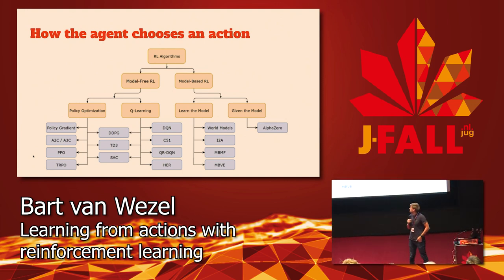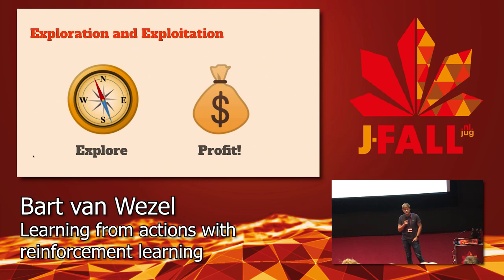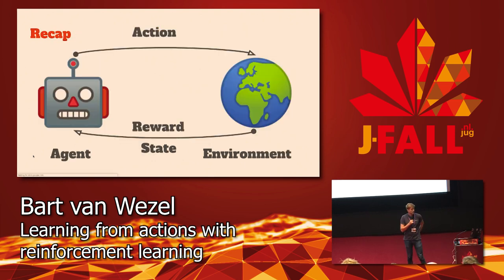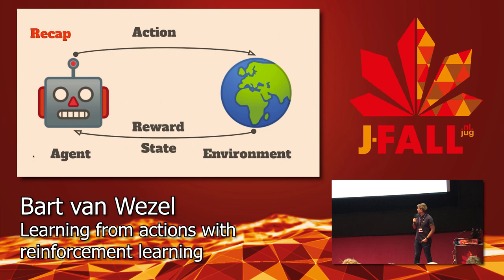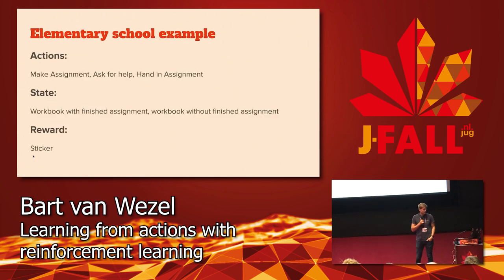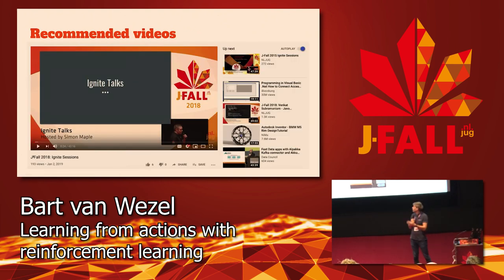Making the assignment in elementary school didn't give a reward directly, but it moved me to a state closer to a reward. There are many reinforcement learning algorithms, but most consist of two phases: an exploration phase, where the agent tries to discover as many actions as possible, and an exploitation phase, where what was learned is used to maximize the action with the most reward. In recap: we map the state to the agent, the agent chooses an action, and the reward and new state are given back.